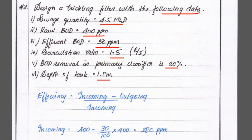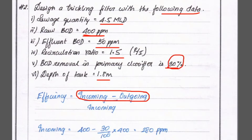We have to find out the diameter of the trickling filter. First, we find the efficiency: efficiency = (incoming BOD - outgoing BOD) / incoming BOD. The raw BOD is 400 ppm and 30% is removed in the primary sedimentation tank, so incoming BOD = 400 - 30% of 400 = 400 - 120 = 280 ppm.